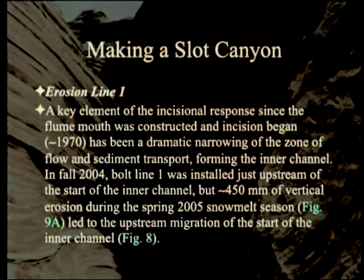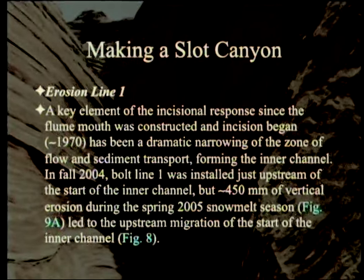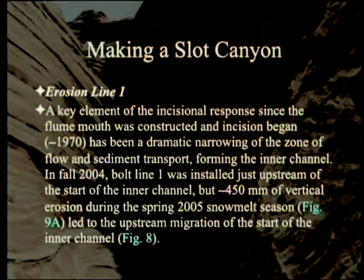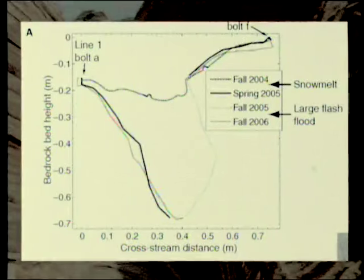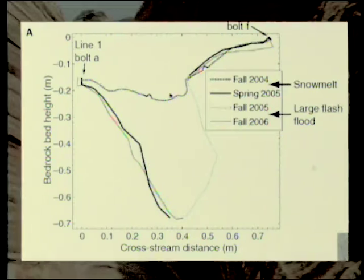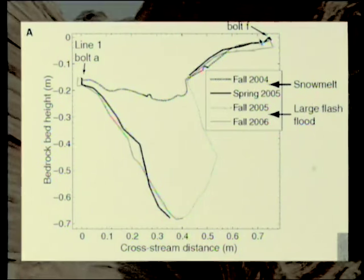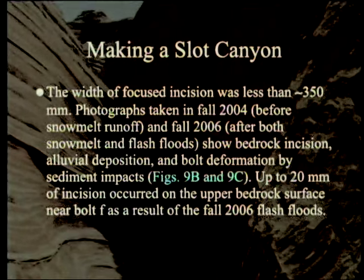Erosion line one: a key element of the incisional response since the flume mouth was constructed has been a dramatic narrowing of the zone of flow and sediment transport, forming the inner channel. In fall 2004, bolt line one was installed just upstream of the start of the inner channel, but approximately 450 millimeters of vertical erosion during the spring 2005 snowmelt season led to the upstream migration of the start of the inner channel — it's cutting its way back. The width of focused incision was less than 350 millimeters.